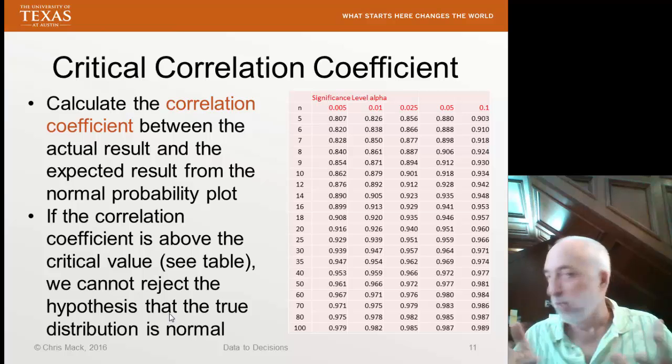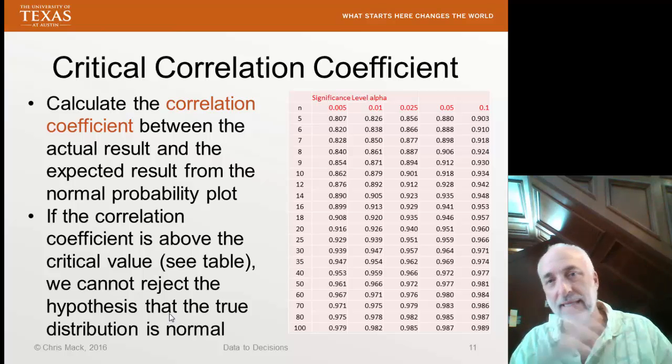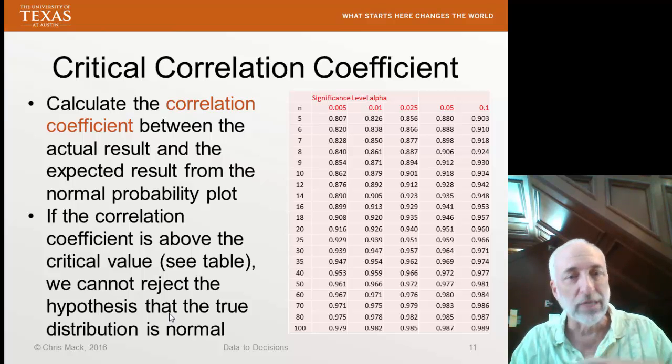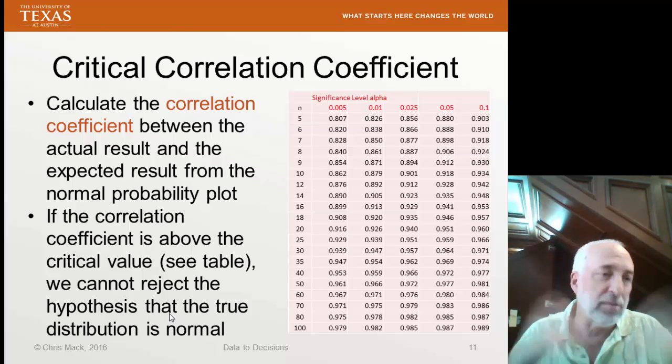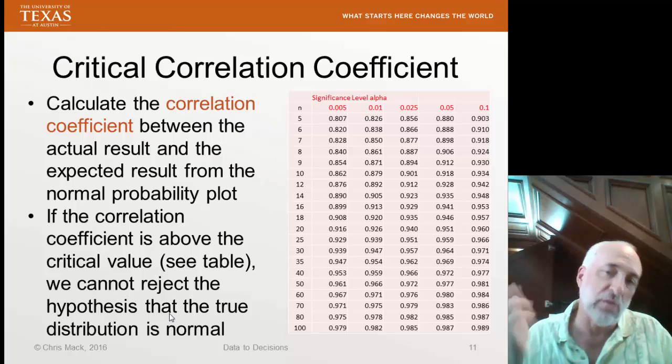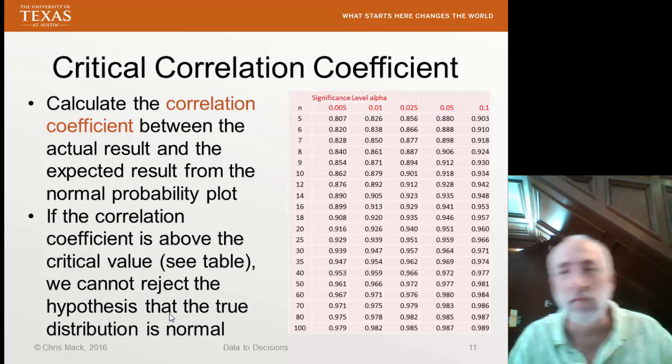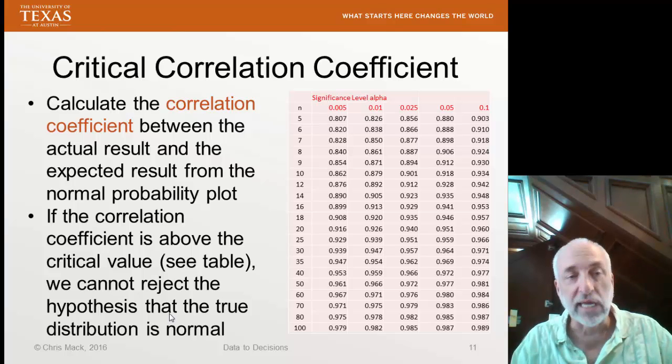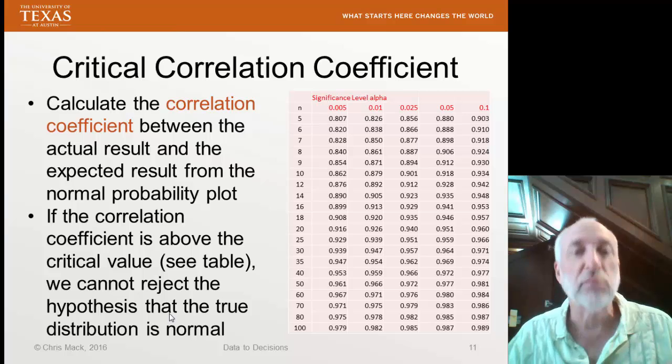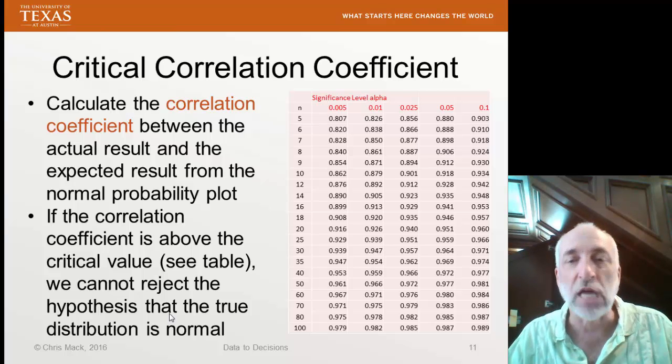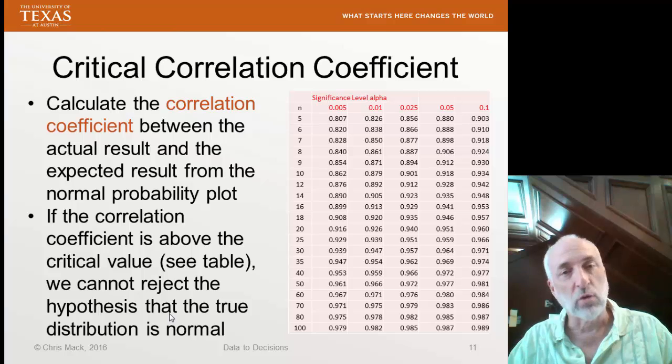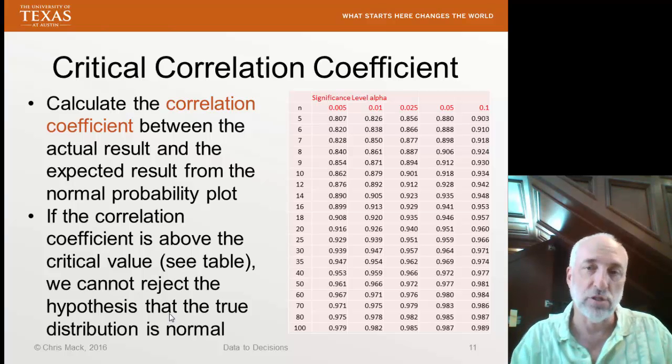This table was generated by doing some simulations, and they varied statistically, just randomly created normal distributions, and said, well, most of the time you get correlation coefficients of this and above. And from that, we can estimate whether or not it's likely that you get this deviation from the correlation coefficient of 1, given just normal random variations.